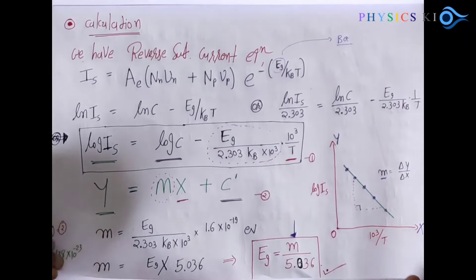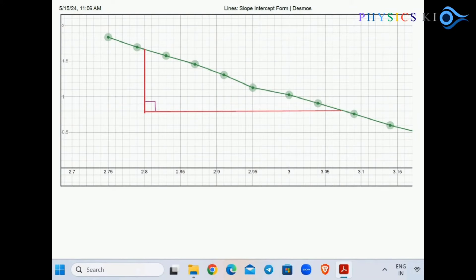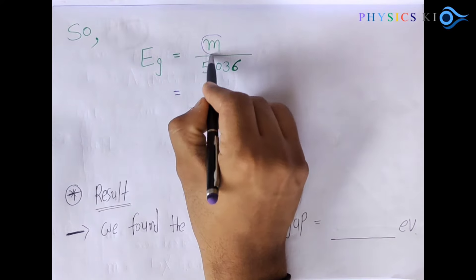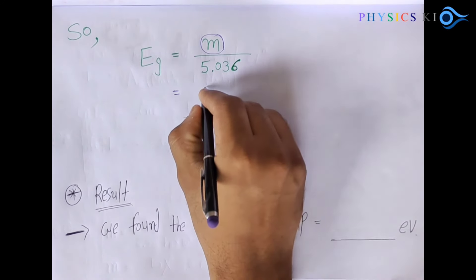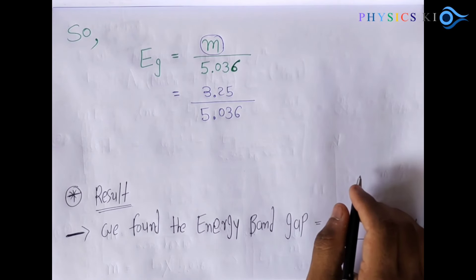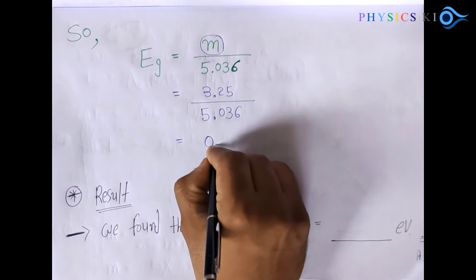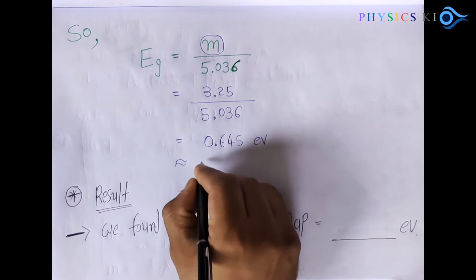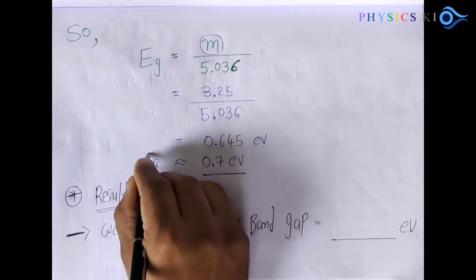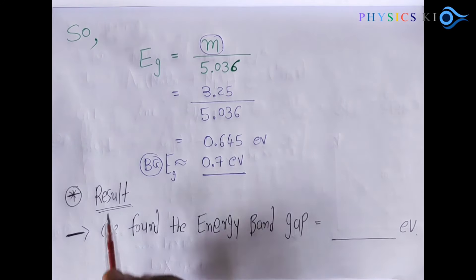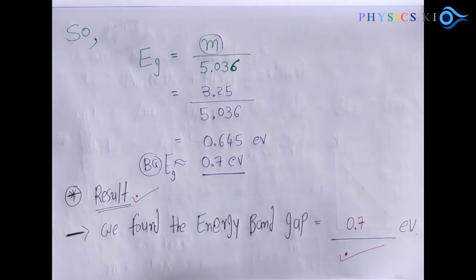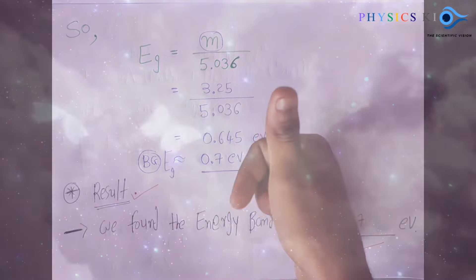Using the computer-prepared graph, I got a slope value of 3.25 divided by the appropriate constant. Applying the calculator, I found the energy gap Eg = 0.645 electron volt, which is nearly 0.7 electron volt. So our result is: the energy band gap Eg ≈ 0.7 electron volt. We got a very good result in this experiment. Thank you very much.